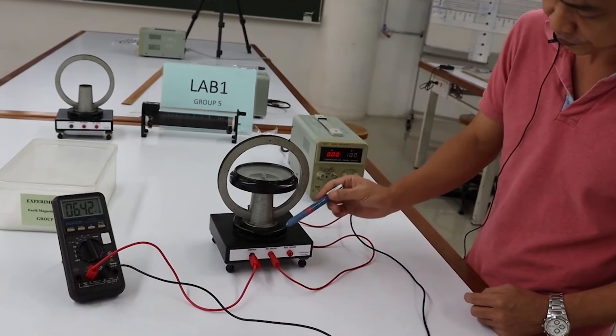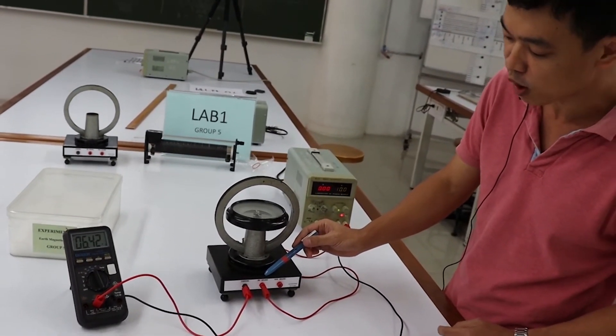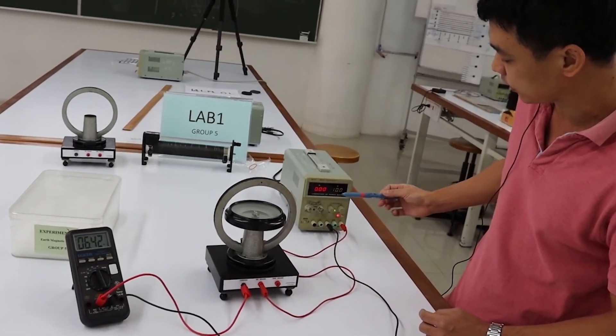The experiment consists of two parts. First we use 50 turns coil at the applied voltage of 10 volts.